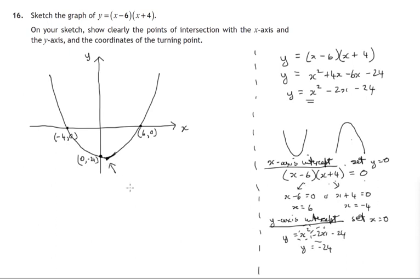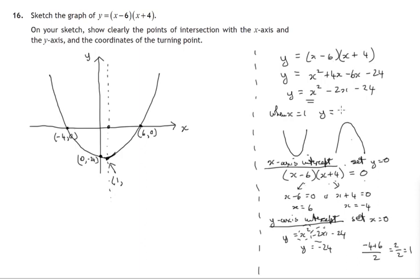The final feature is the minimum turning point. By the symmetry of this graph, the turning point lies halfway between x equals negative 4 and x equals 6. Halfway between negative 4 and 6 is 1, so the turning point has x-coordinate 1. For the y-coordinate, when x equals 1: y equals (1 minus 6) times (1 plus 4), which is negative 5 times 5, giving negative 25. We can check this: the turning point is 25 units below the x-axis and the y-intercept is 24 units below, which seems reasonable in the diagram.